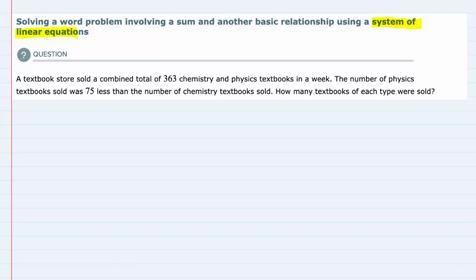So I'm going to work with that ending final question first. How many textbooks of each type were sold? I look back at the question and find out that we're talking about two types of books, chemistry and physics. So I'm going to set my variables and say that C equals the number of chemistry books sold and P equals the number of physics books sold.